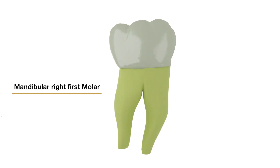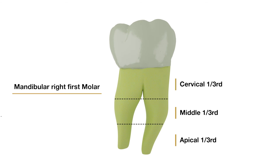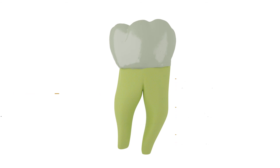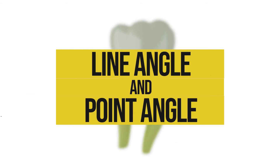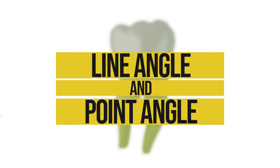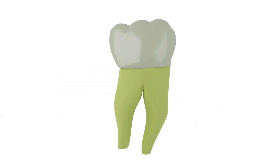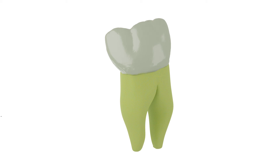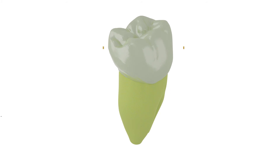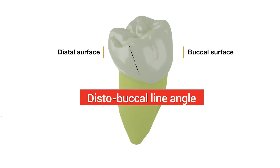The root can also be divided into apical, middle, and cervical one-thirds. Now let's move on to line angles and point angles, which are used only as descriptive terms to indicate a location, as a tooth naturally doesn't have hard edges. A line angle is formed by the junction of two surfaces and derives its name from the combination of the two surfaces that join.